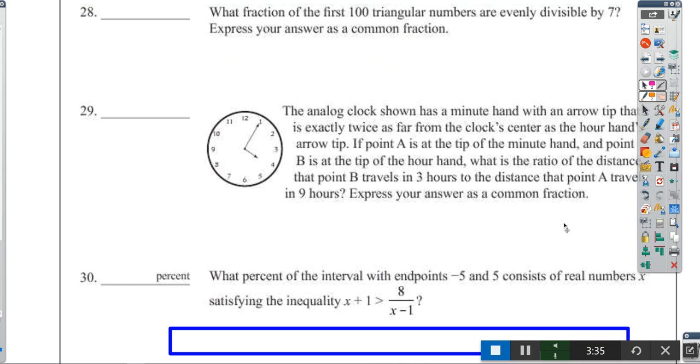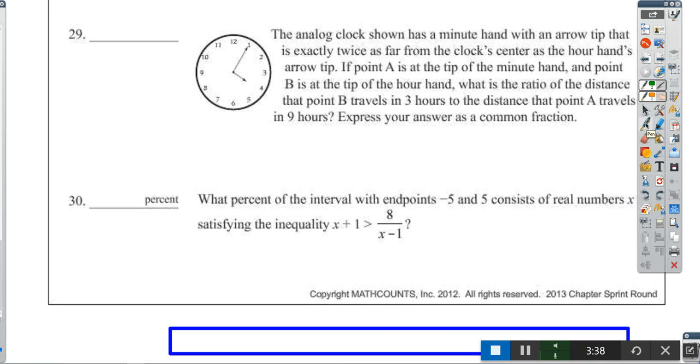Analog clocks, don't you love them? This analog clock has a tip of a minute hand, this is A, tip of hour hand is B. This short distance is X, this distance is 2X. We're looking for a ratio, so we don't need the actual distance, just make sure it fits the criteria.